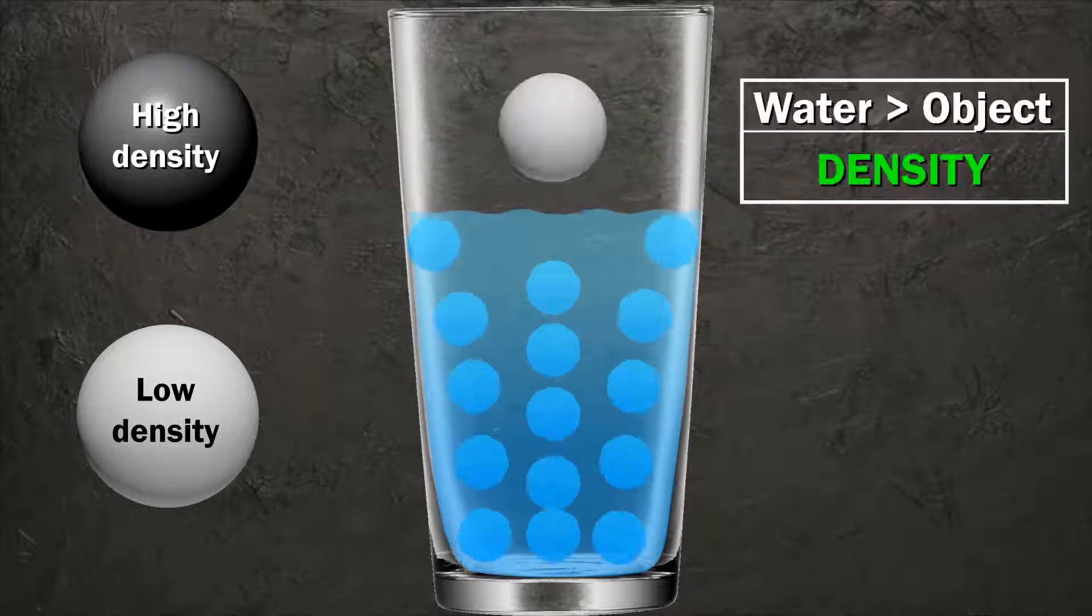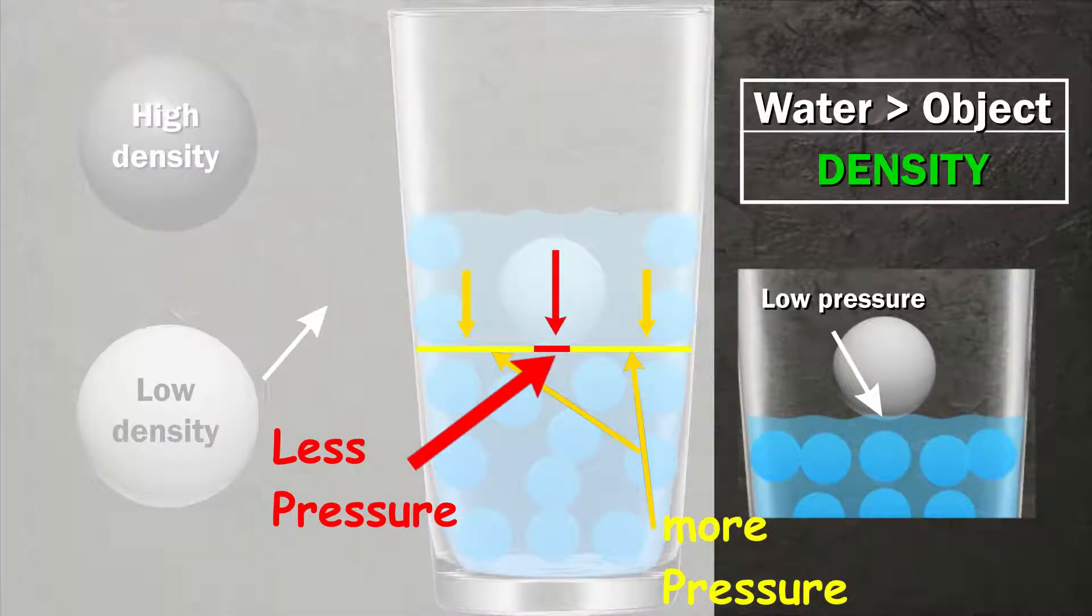Case 2: when the density of the object is less compared to water. When an object which has density less compared to water is dipped, at the base of the object, there is less pressure compared to the region under water at the same level.